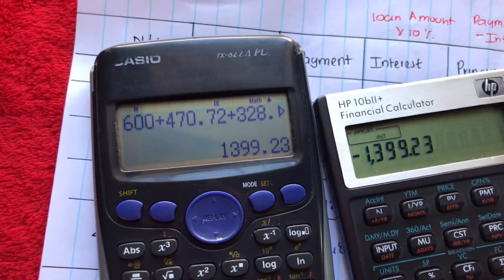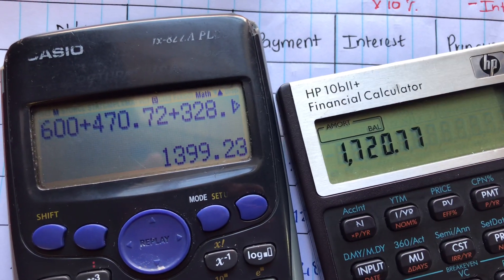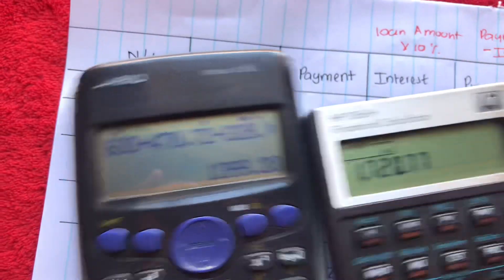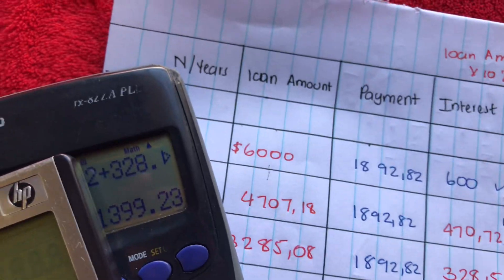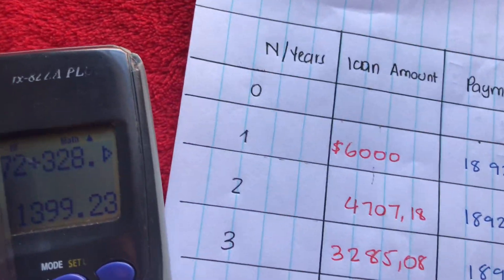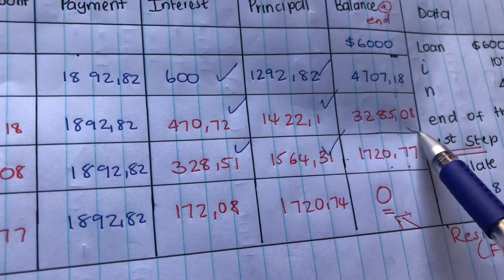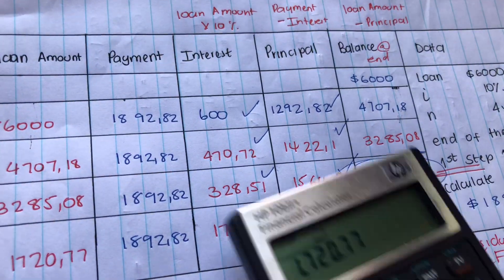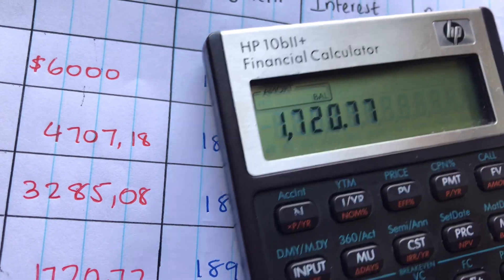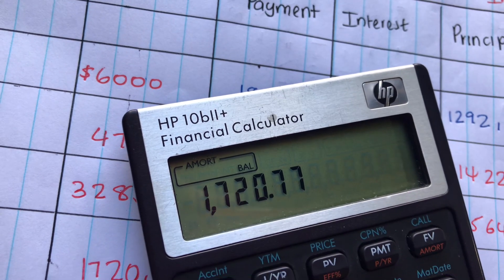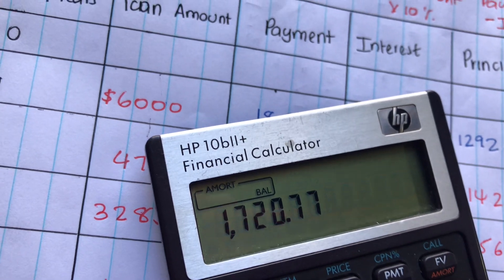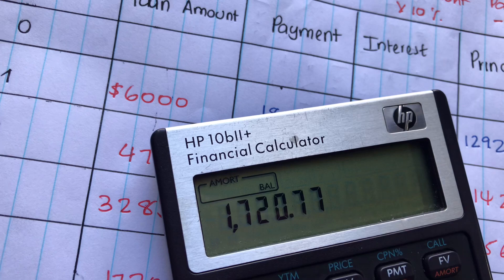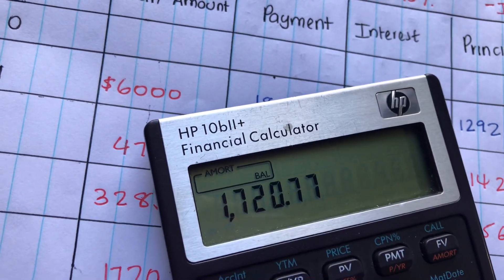Pressing equal one more time gives you the balance from year one to year three. This is the balance at the end of year three — the same value shown in the amortization table. With the balance, you don't add anything; it simply shows you exactly how much you still owe at the end of year three.